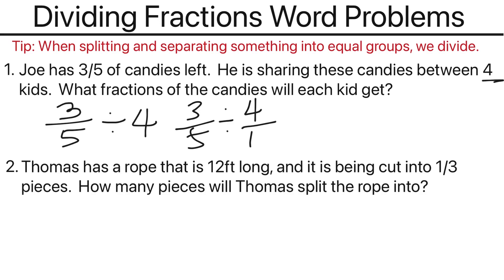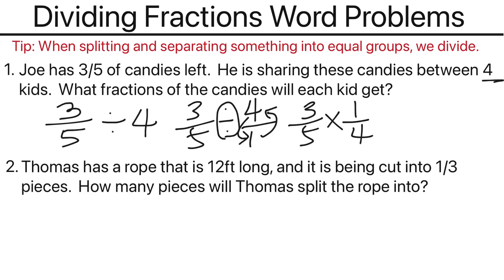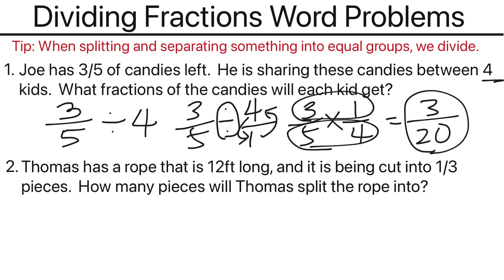Now we have a fraction dividing by a fraction. So the next step, we would need to keep, switch, and flip. Keep would be three-fifths, the division would switch to multiplication, and the four over one we would need to flip — one goes on top, four goes on the bottom, becoming one over four. Now we can multiply across: three times one is three, five times four is twenty. Therefore, our answer is three-twentieths of the candies each kid will receive.